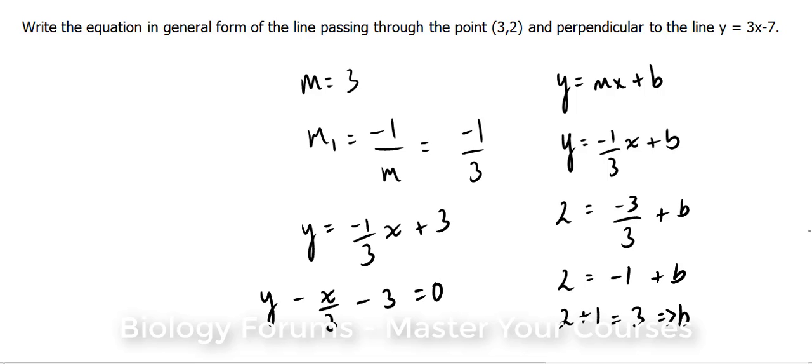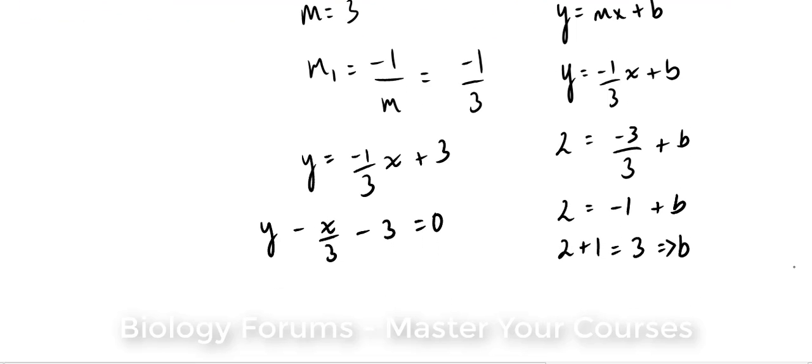And we don't like to have fractions, I mean I personally don't like to have fractions, so what I would do in this stage is multiply the whole thing by 3. And what you do to one side, you do to the other, but since this is 0, we're just going to leave it at 0. We end up with 3y minus x minus 9 equals 0.